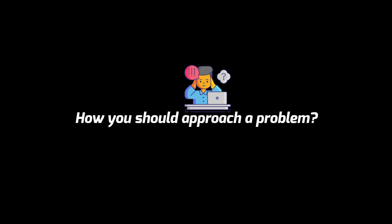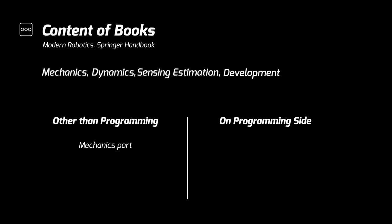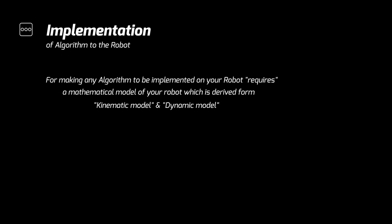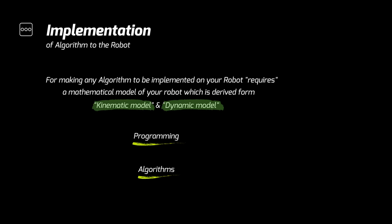You don't need to get through all of these concepts at the very start. Let's first categorize the content of these books: mechanics, control, dynamics, sensing, estimation, and development. You might think that mechanics, dynamics, and control are not programming, while sensing, estimation, and development are on the programming side. When you go through these books you will find a lot of complex 2D and 3D math. The reason is that implementing any algorithm on your robot requires a mathematical model derived from kinematic and dynamic models, which are then utilized in programming.